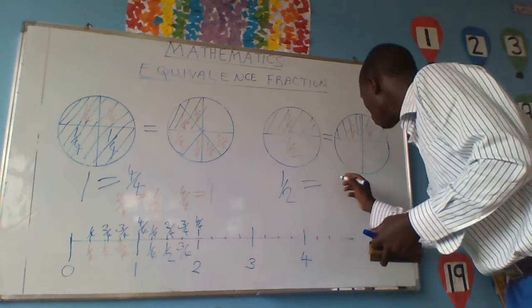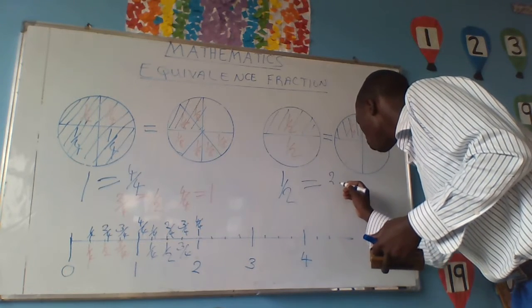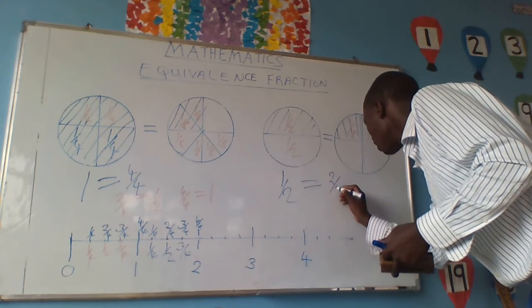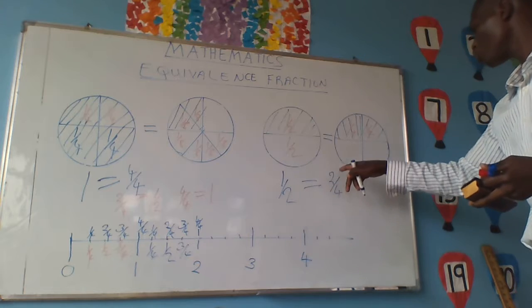So they will be equal to 1, 2 quarters. So it will be equal to 2 out of 4. 1 out of 2 equals 2 out of 4.